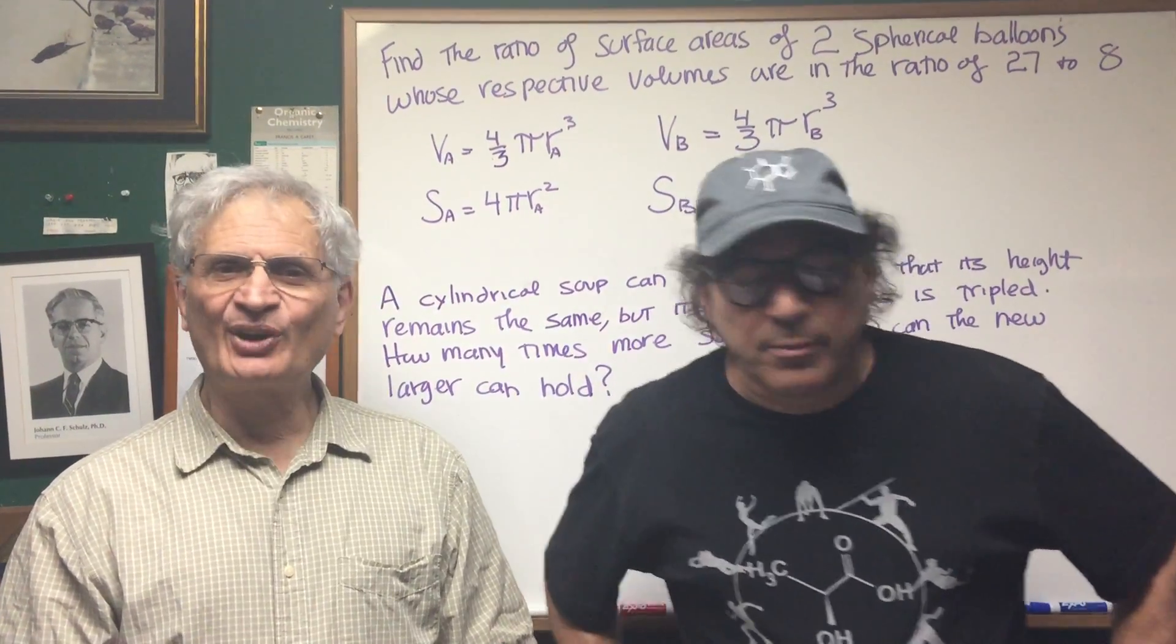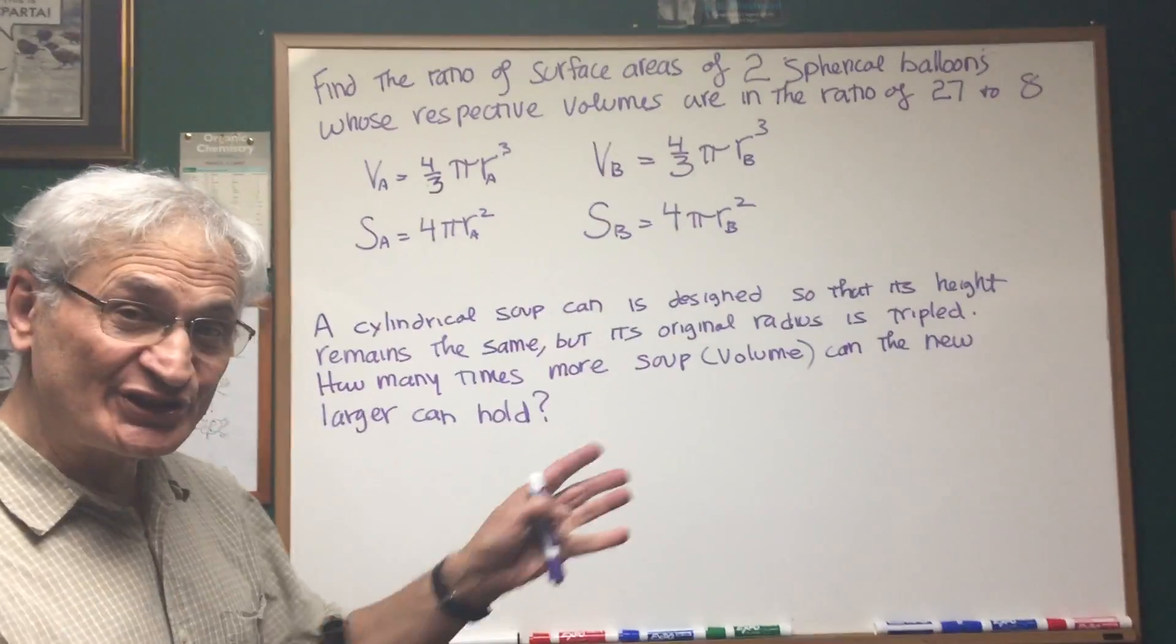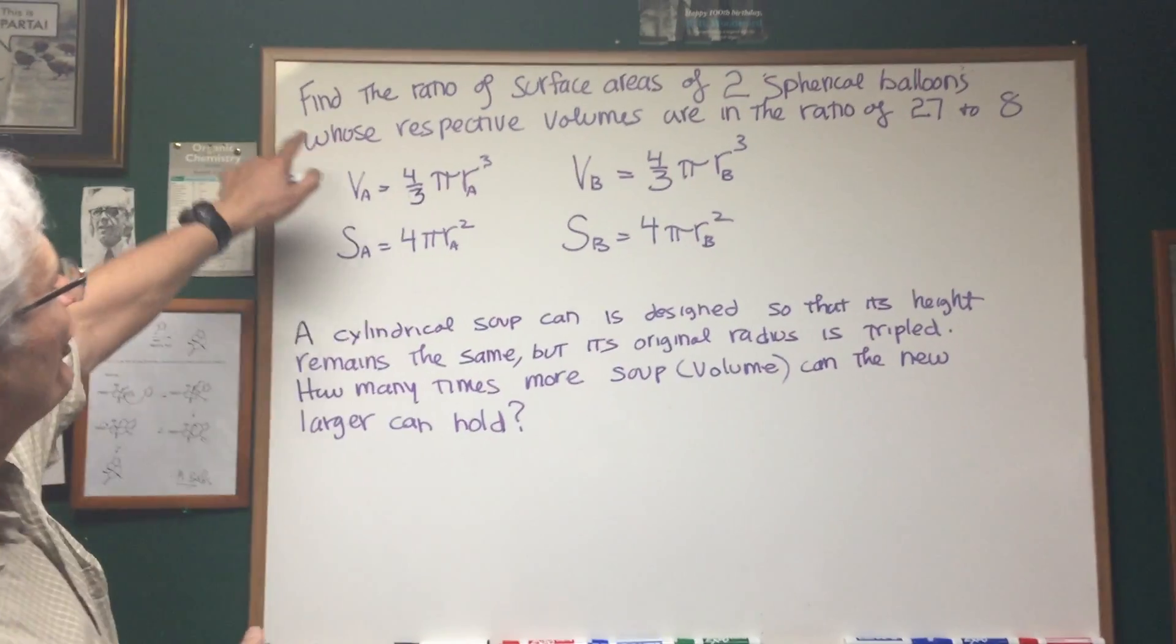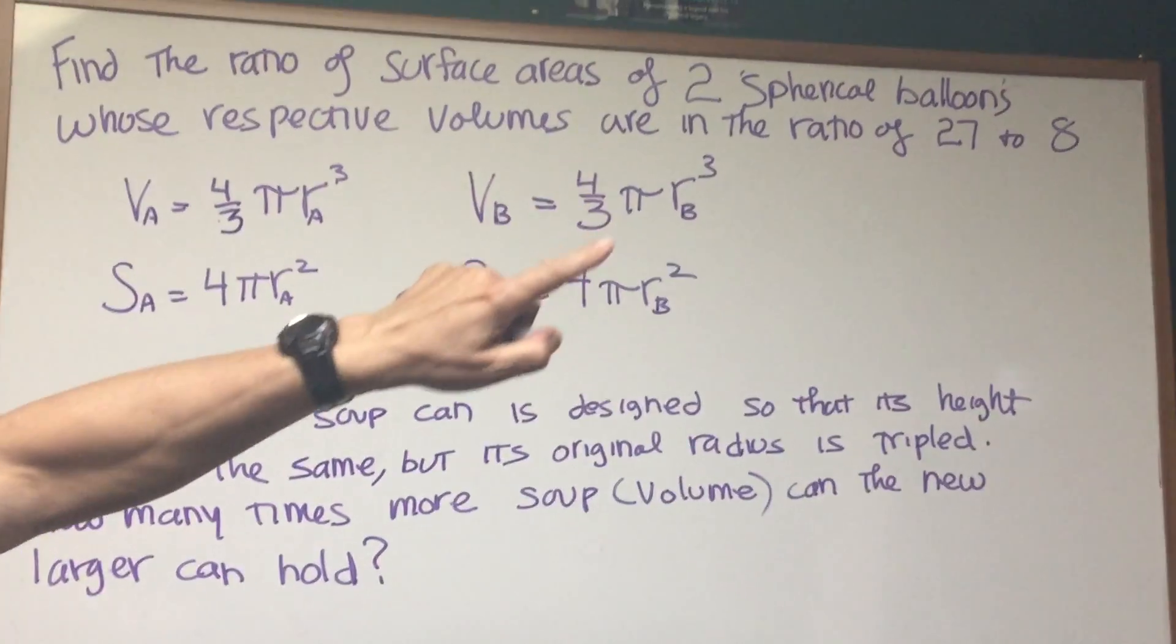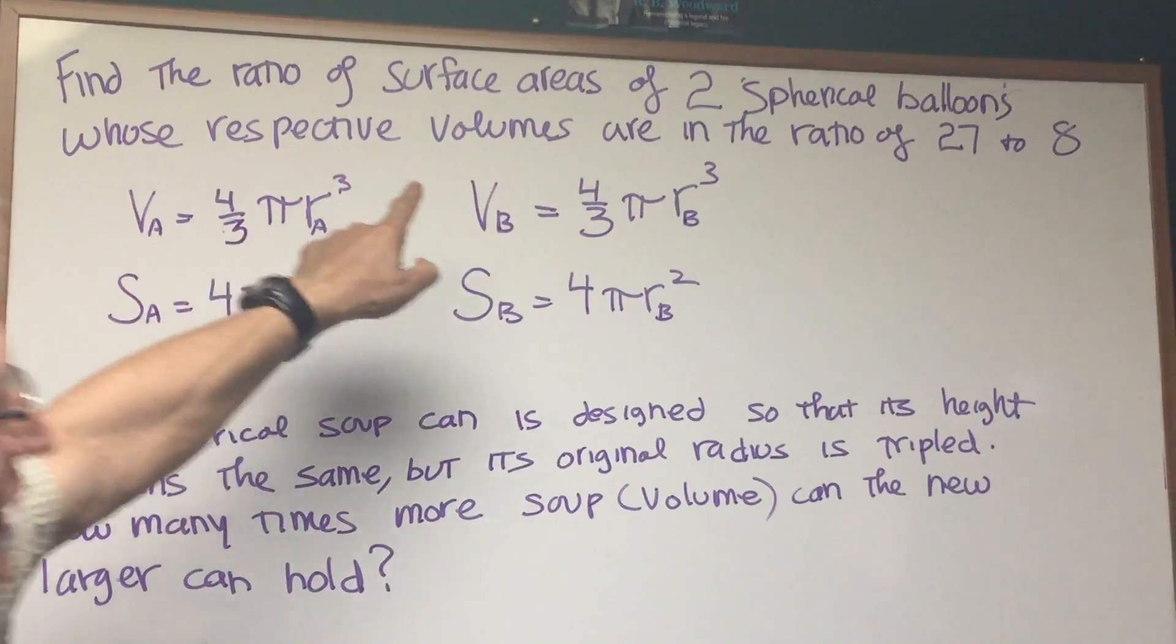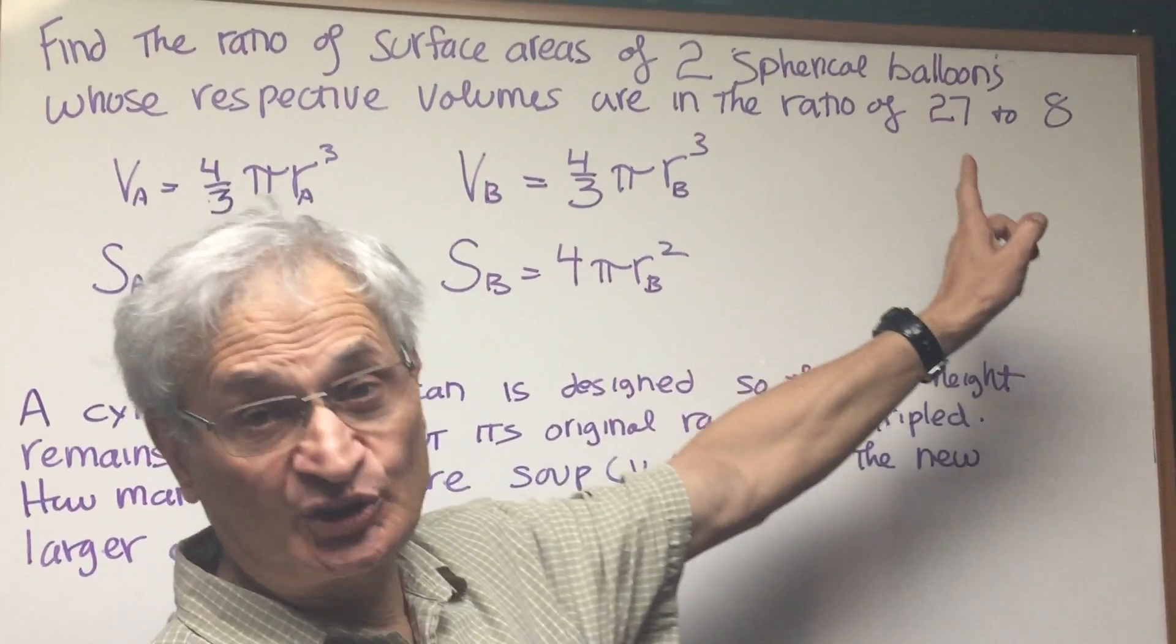All right, go to it. Okay, here we go. Spheres and cylinders, let's read the problem first. Find the ratio of surface areas of two spherical balloons whose respective volumes are in the ratio of 27 to 8.